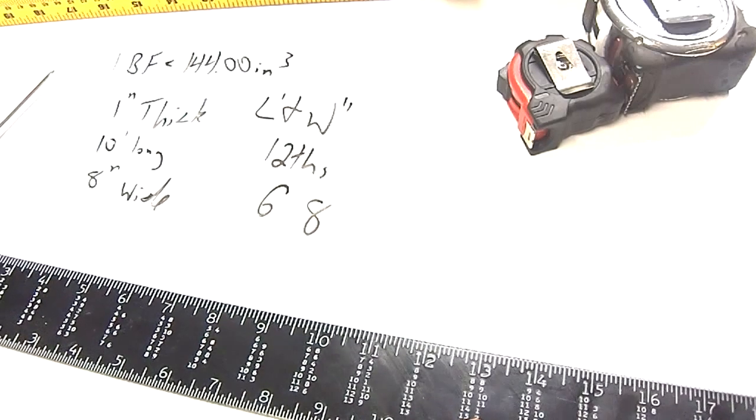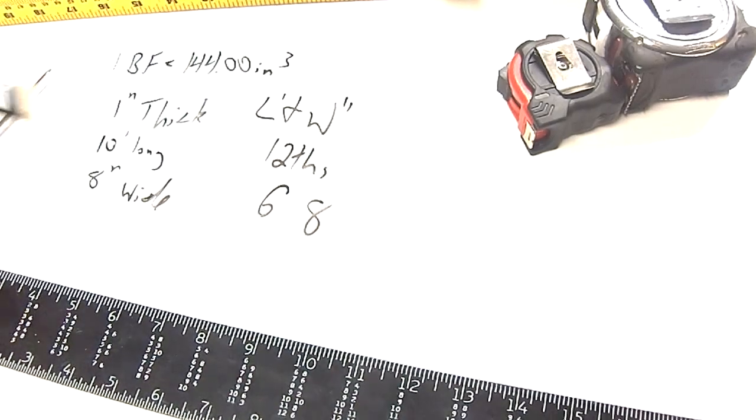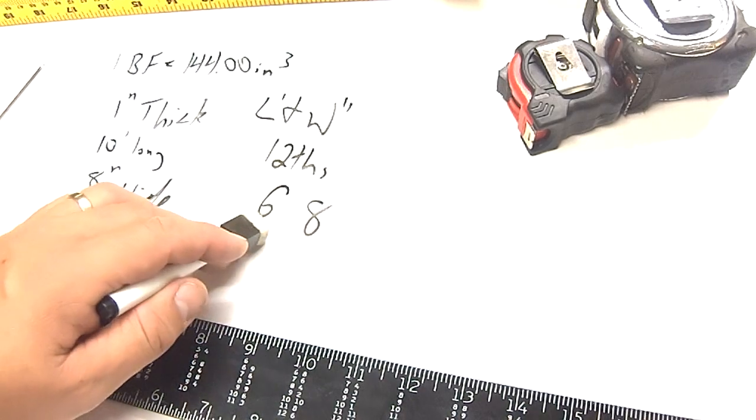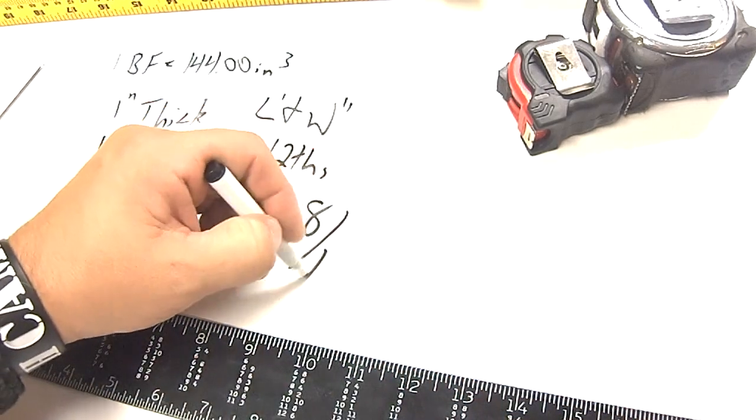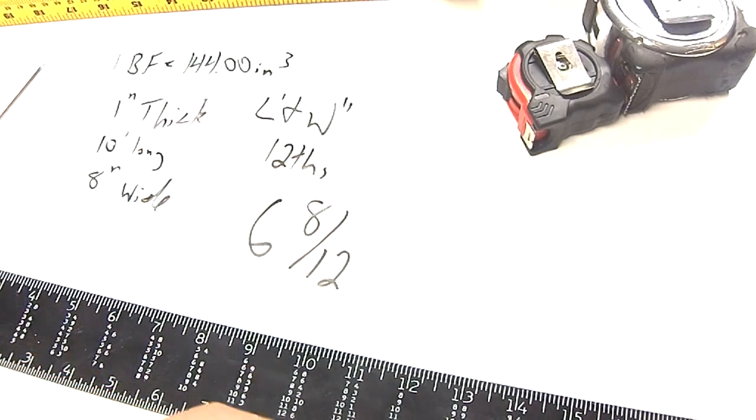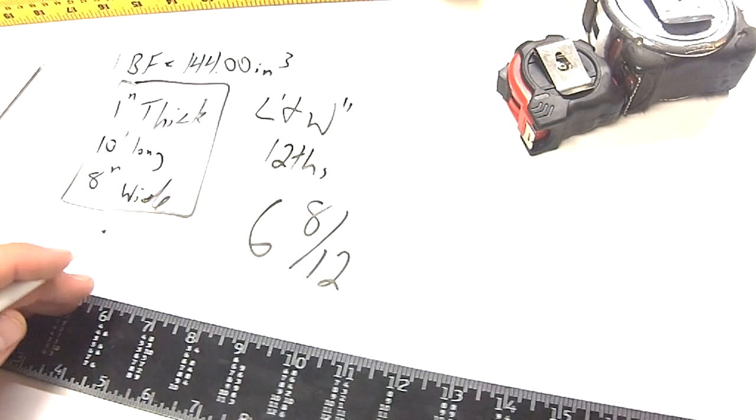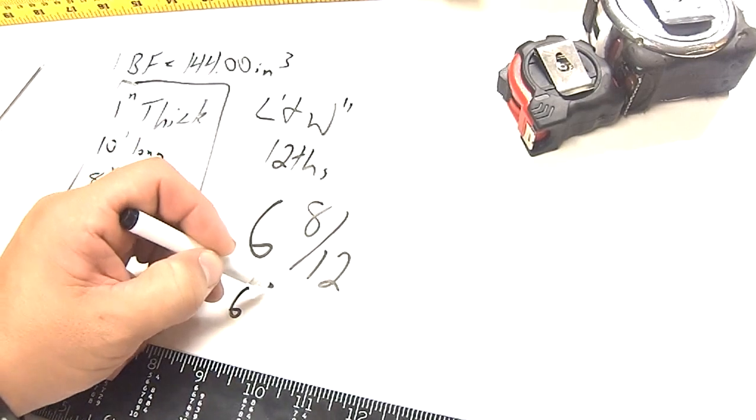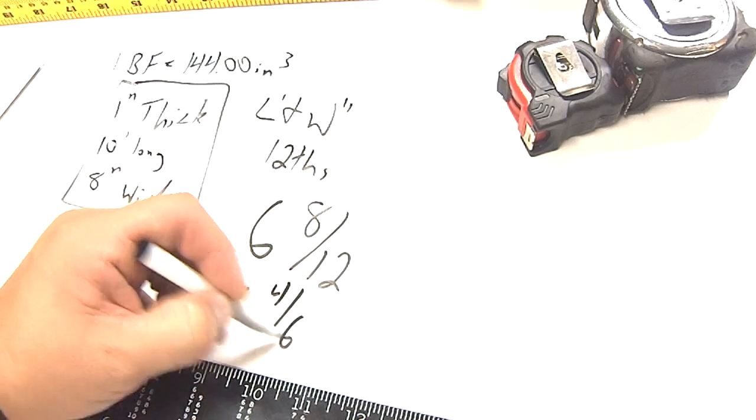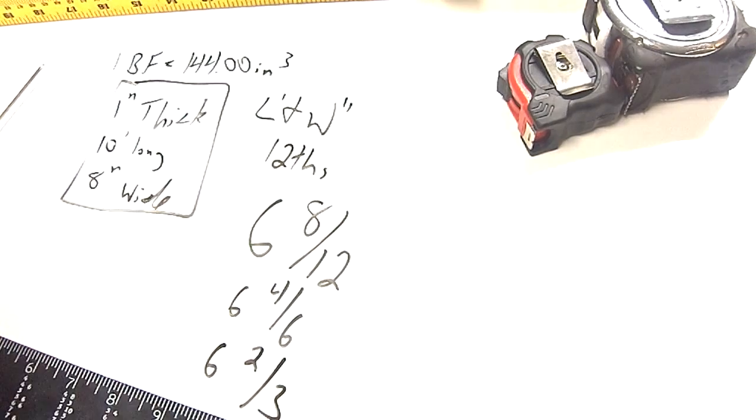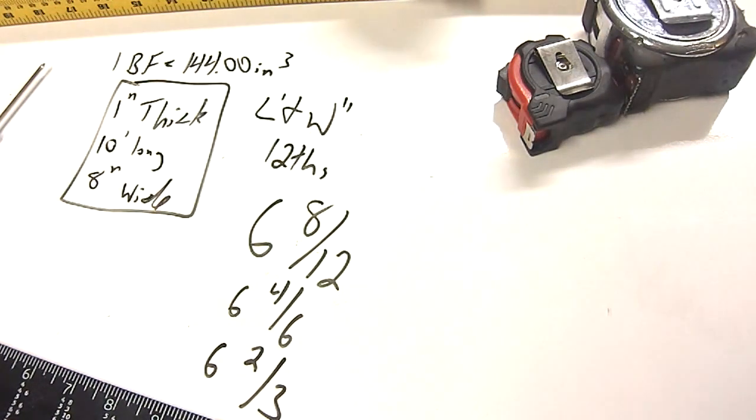So, for this one, the problem that we're working on right now, for a 1-inch thick, 10-foot long, 8 inches wide, it is 6 and 8 12ths. That is the board foot for something of this size. Now, obviously, you're going to be breaking down this fraction a little bit. 6 and 4, 6, and then 6 into thirds. That's how that works.